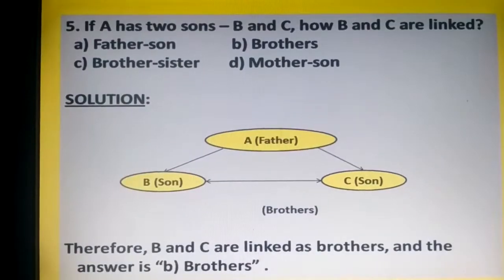If A has two sons, B and C, how are B and C linked? If A has two sons, B and C, then how do they link to each other? Brothers. B and C are brothers. Therefore, B and C are linked as brothers, and the answer is B, brothers.